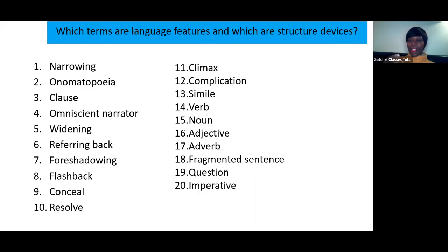We have narrowing, onomatopoeia, clause, omniscient narrator, widening, referring back, foreshadowing, flashback, conceal, resolve, climax, complication, simile, verb, noun, adjective, adverb, fragmented sentence, question, and imperative. Which of these are language, which are structure, and which are both? Pause the seminar and have a go at the task.